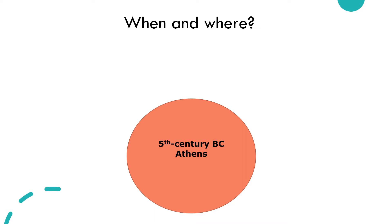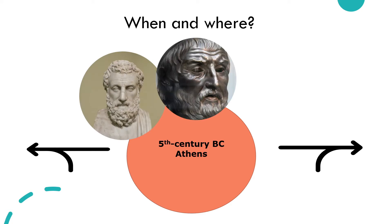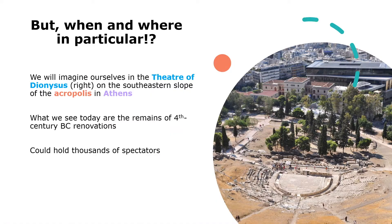Let's begin with when and where. We are setting our time machine for 5th century BC Athens. We could go back into the 6th century BC to consider where tragedy came from, or move forward in time, but we're going to concentrate on the 5th century as this was the high point for Greek tragedy — when the three great, luxuriously bearded tragedians were composing their works.